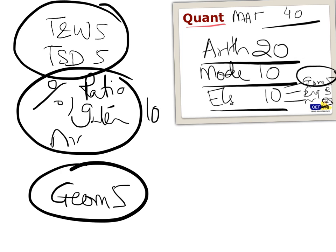Moving to modern maths: permutation combination 4 questions on an average, probability again 4 questions, and set theory 1 question.